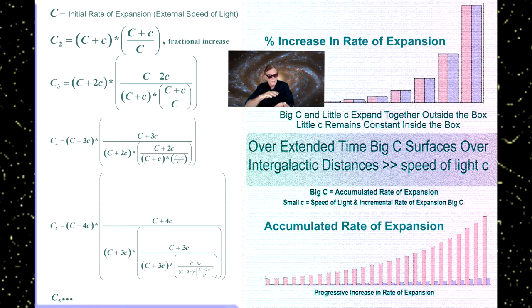So since big C is such an enormous value, this progressive increase in rate of expansion due to big C plus little c times the ratio of big C plus little c to the value of C, that change is almost zero.